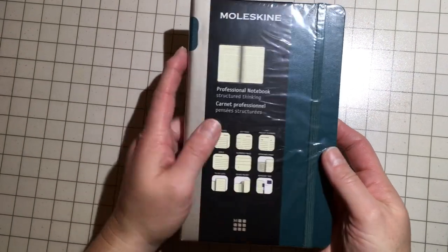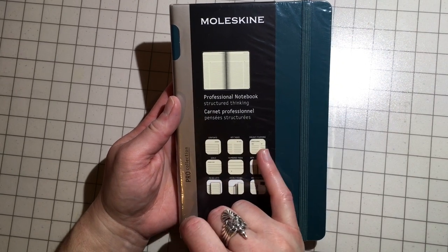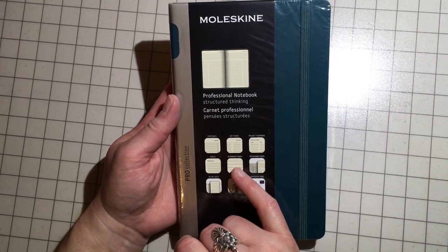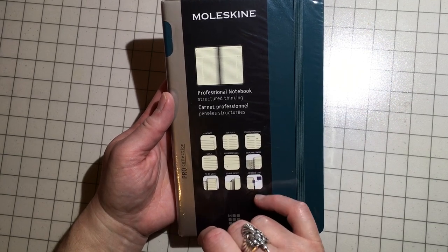This is different from the normal Moleskines that you would get. It's got a table of contents, key tasks, project planning, goals, numbered pages, detachable pages, to-do lists, double pocket, and adhesive tabs.